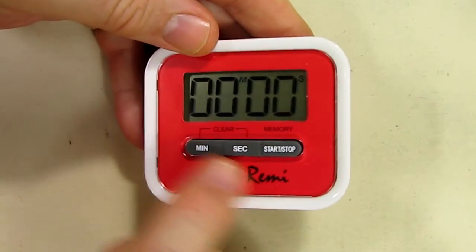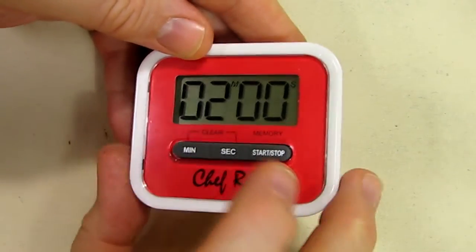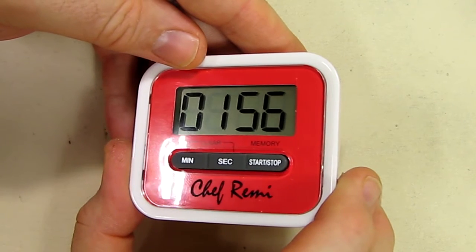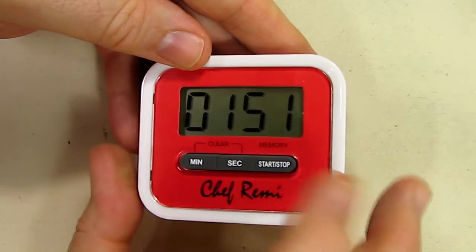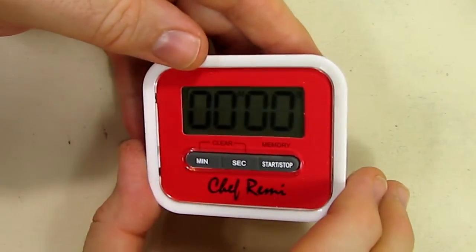I believe you can reset it by hitting both those buttons right there. If you want to hit minutes, you just hit minutes, hit start and stop. Now you see one minute, two minutes actually, and it's counting down now. You can stop it and start it and reset it by hitting those two right there.